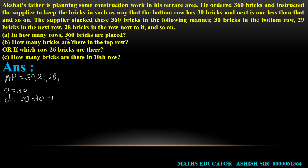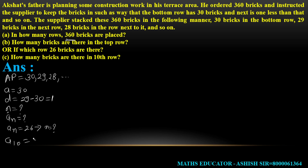In how many rows are 360 bricks placed? We need to find the value of n. For the second part, find the number of bricks in the top row. Third, in which row are 26 bricks present — find n when an equals 26. And find the bricks in the 10th row, that is find a10.